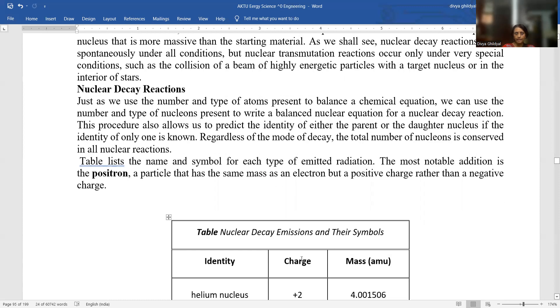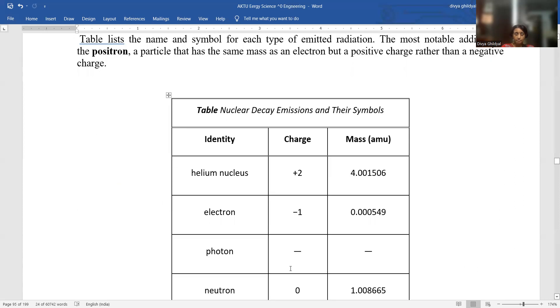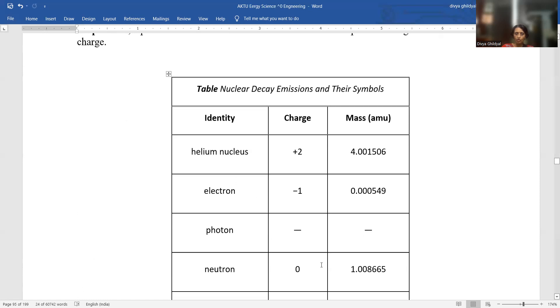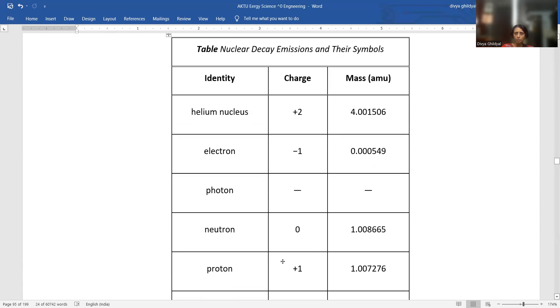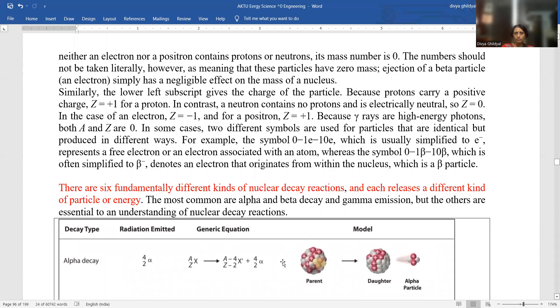Just as we use the number and type of atoms present to balance a chemical equation, we can use the number and type of nucleons present to balance a nuclear equation. Nuclear decay emissions and their symbols: helium nucleus plus two, electron minus one charge, proton nil, neutron zero, proton plus one charge. You will be using them to solve the questions of nuclear reactions.